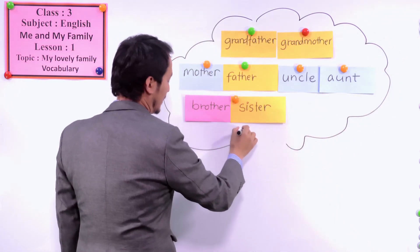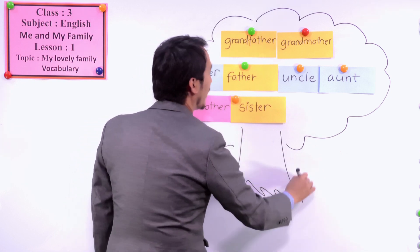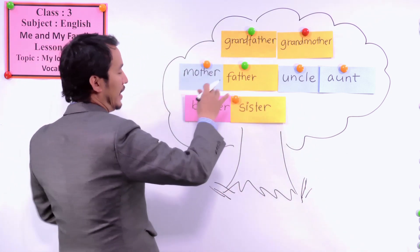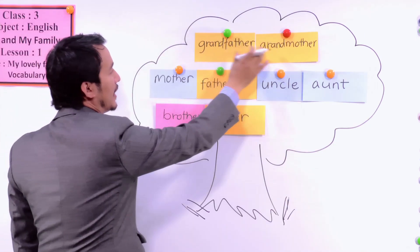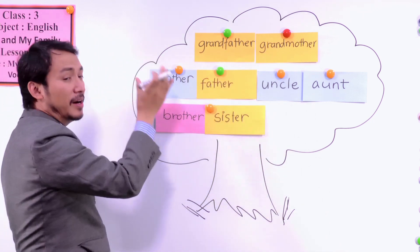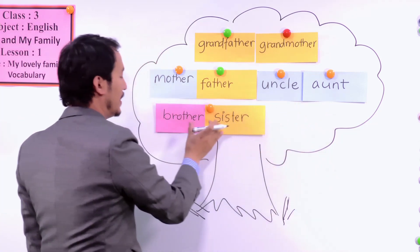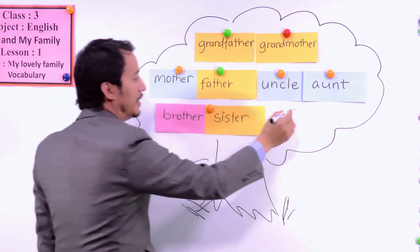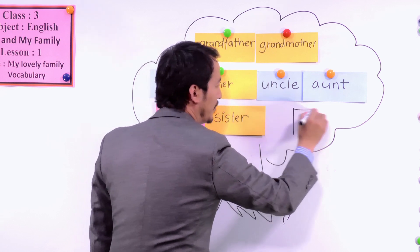This is a tree, and you have a tree trunk here. At the top of your tree there are grandfather and grandmother, and then your mother, your father, uncle, aunt, brother, sister. Here also you can have brothers and sisters.